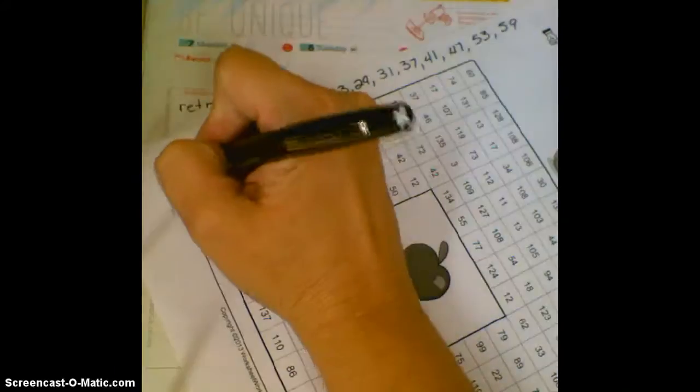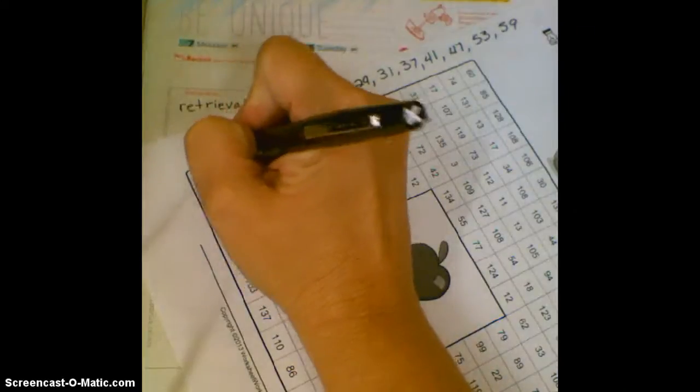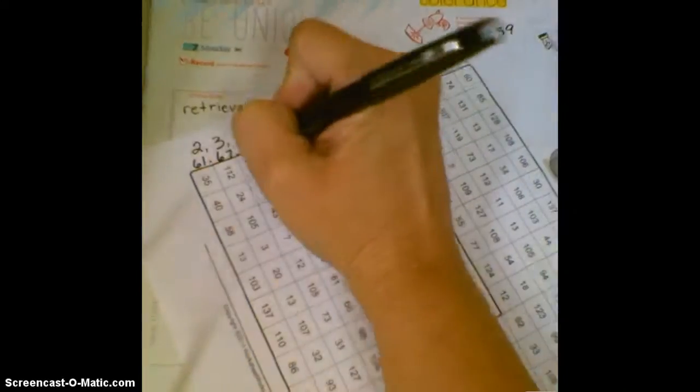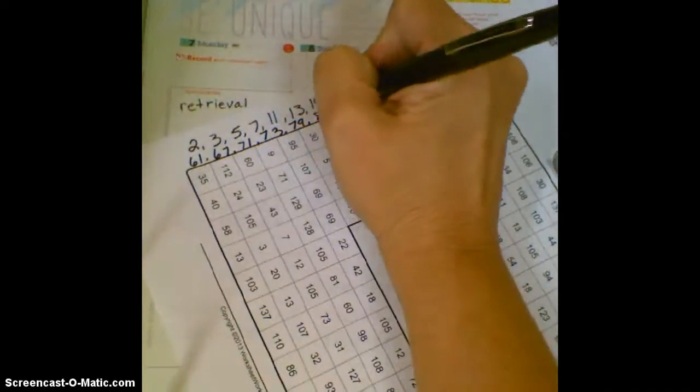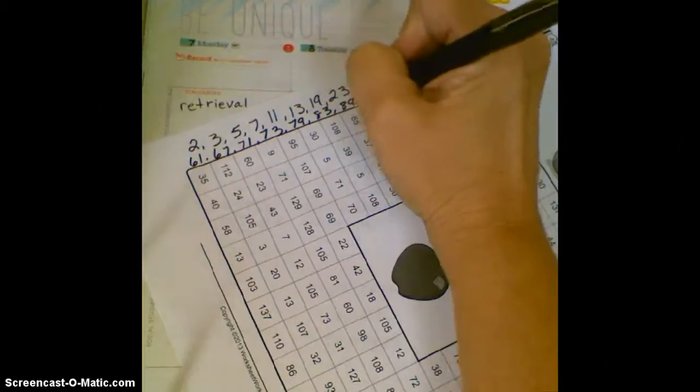And then I'm going to start second row because I'm running out of room. 61, 67, 71, 73, 79, 83, 89, 101.